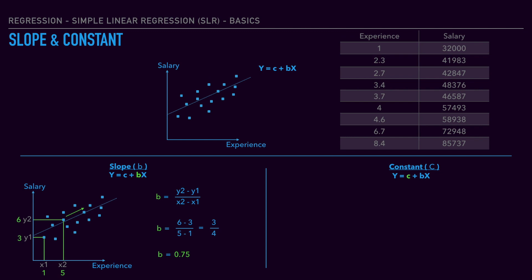The constant is nothing but extending the slope line till it intersects with the y-coordinate. Where it touches, that particular point is the constant value. In our example, it might be approximately 20,000. So if experience is 0, then the starting salary is 20,000.